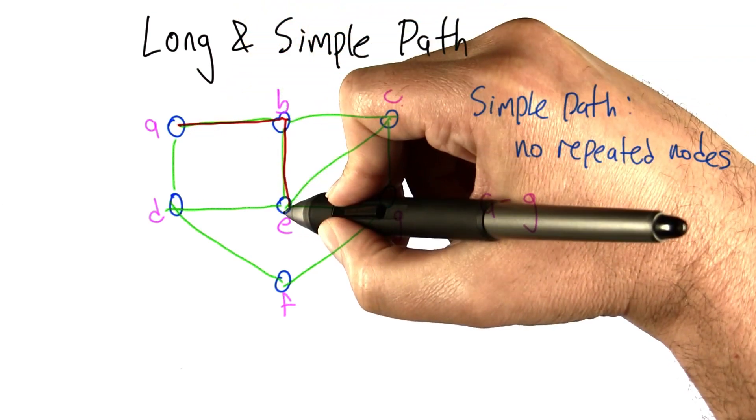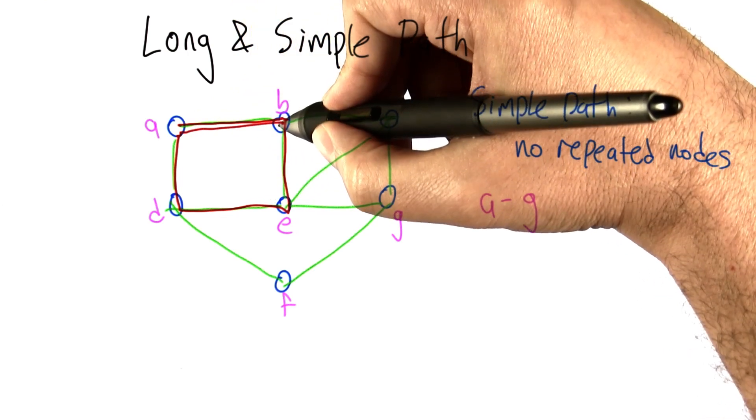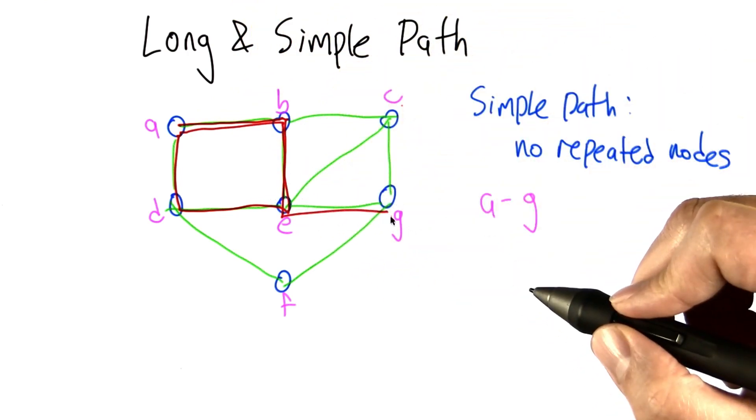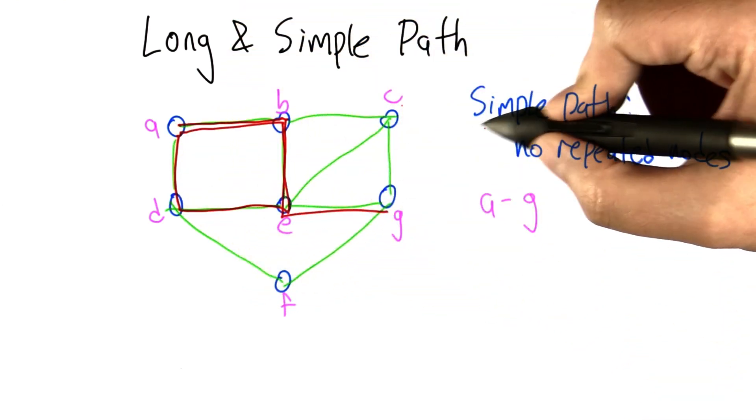A to B to E to D to A to B to E to G. It's a path. It's going from node to node crossing edges, but it's not a simple path.